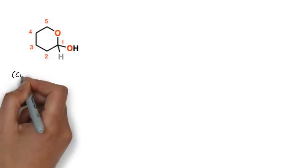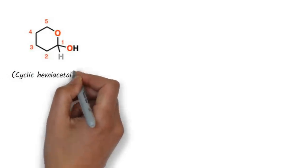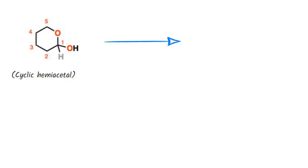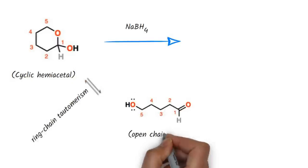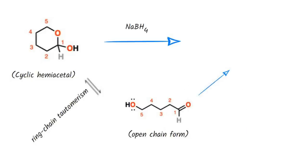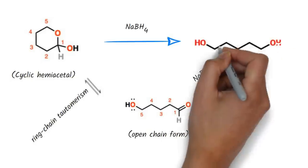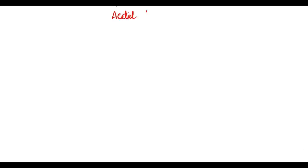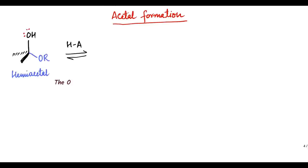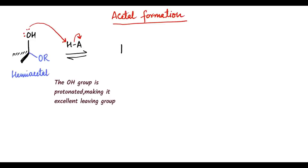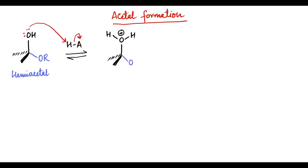For example, if a cyclic hemiacetal is treated with a reducing agent such as NaBH4, through ring-chain tautomerism, it will be in equilibrium with the open chain form, which will be quickly reduced irreversibly to the acyclic alcohol. The acetal is formed from hemiacetal by reaction with a second molecule of alcohol. The OH group of the hemiacetal intermediate is protonated, thereby converting it into an excellent leaving group.